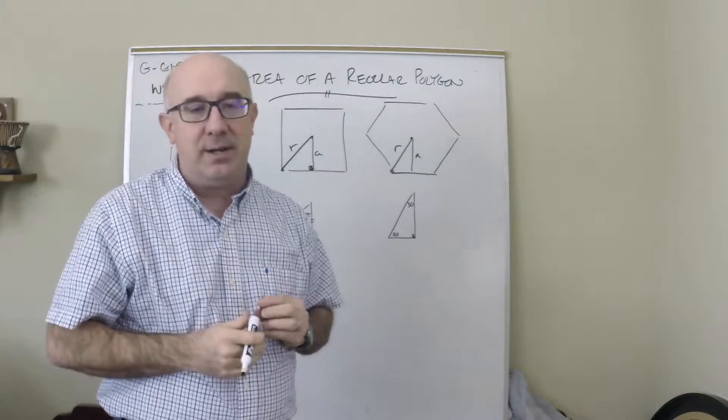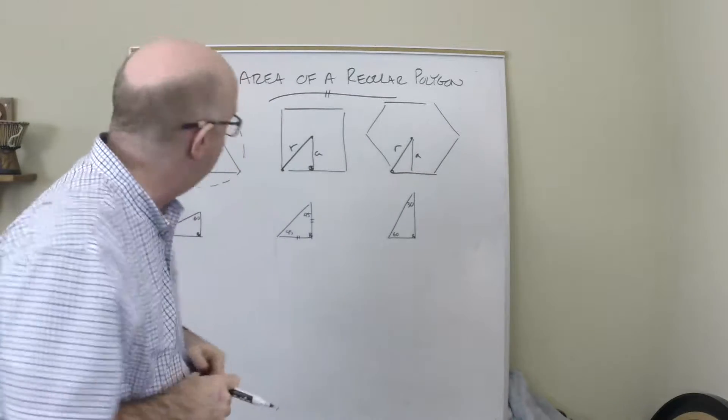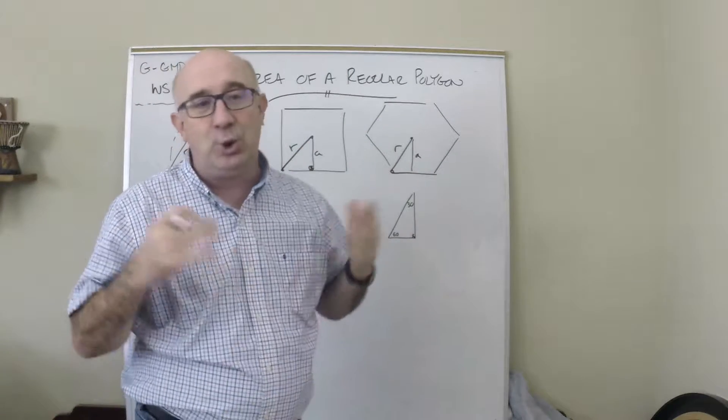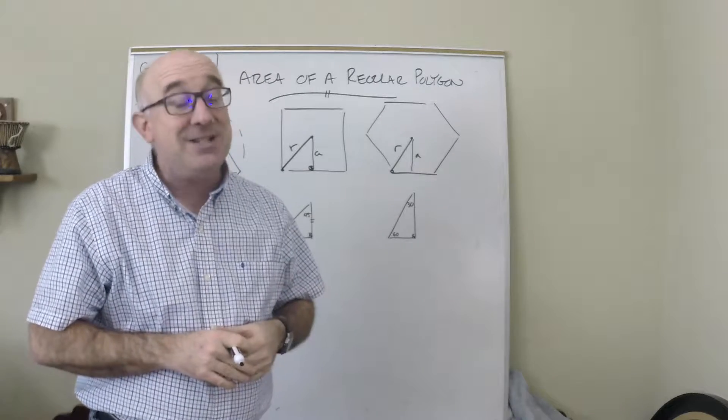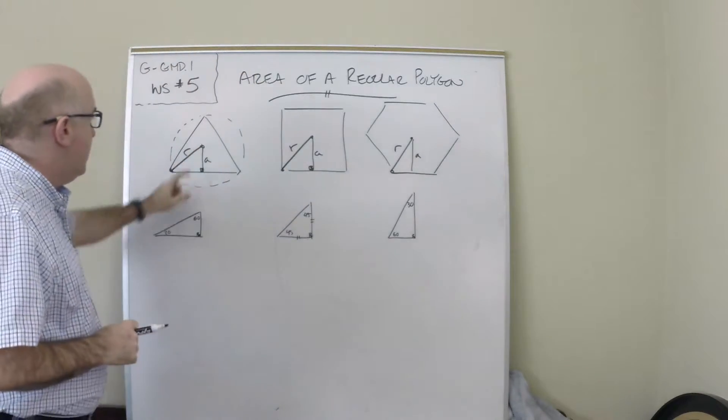Now this forms a triangle inside of the regular polygon that becomes pretty important in finding information about it. The aspect is that these are not just any old trivial triangles, these are all three of them special right triangles.